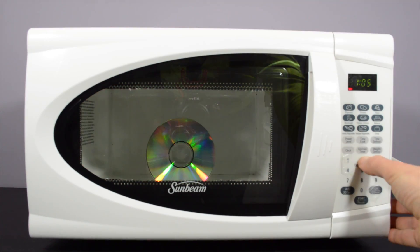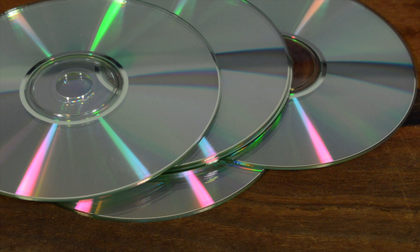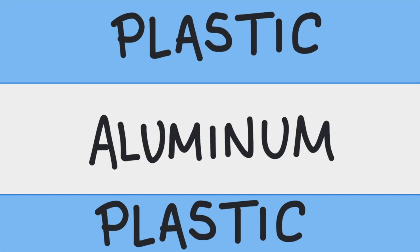What happens when you put a DVD in the microwave? DVDs are made of polycarbonate, a type of plastic, with a layer of aluminum in the middle.